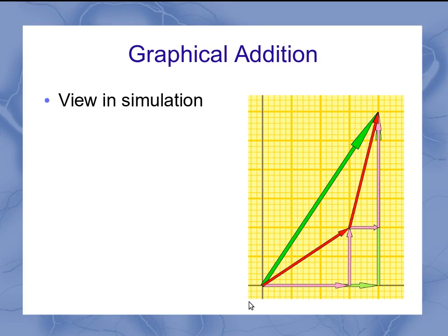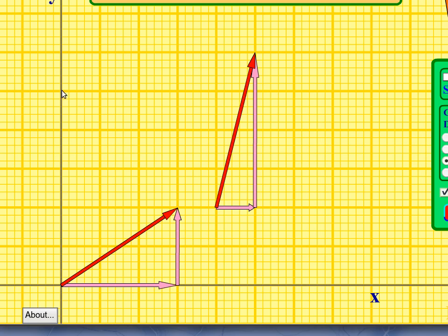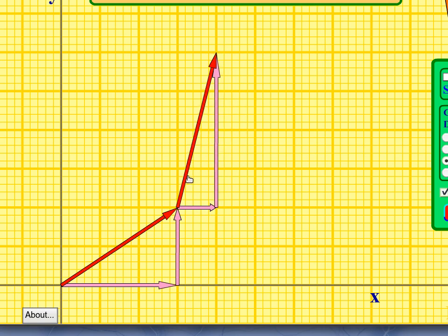Let's connect this back to what we've seen in graphical vector addition. We've got a simulation with two different vectors, and it shows their components here. If I wanted to add these two vectors, I would use my tail-to-head method to connect those two vectors up. When I look at the sum of those two vectors, it has components as well.